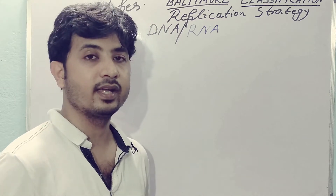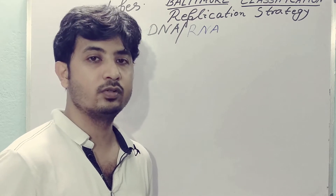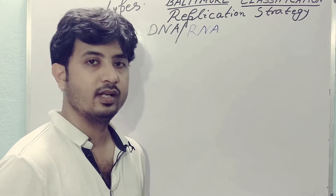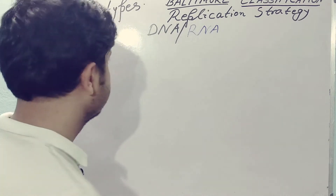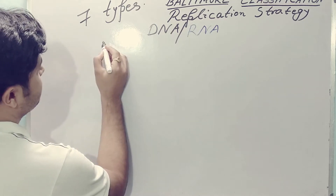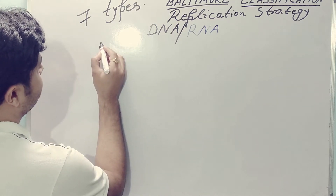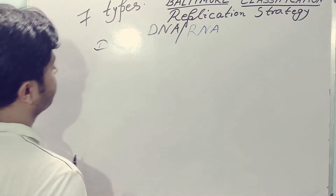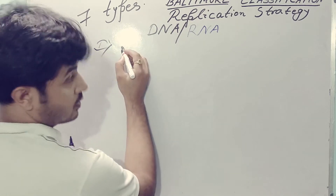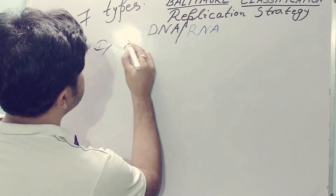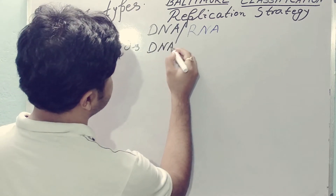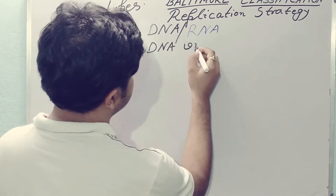This DNA or RNA can be divided into different types, like double-stranded or single-stranded. So I will start the classification now. The first one is Class 1, that is double-stranded DNA virus replication.